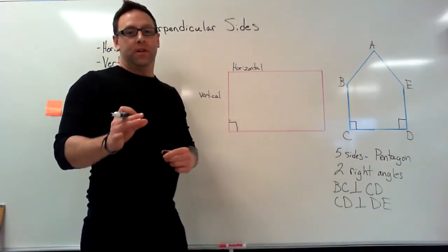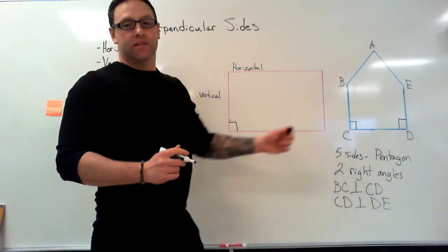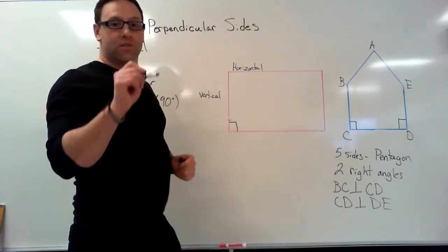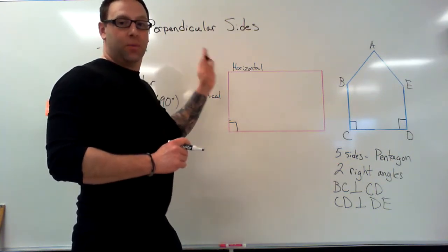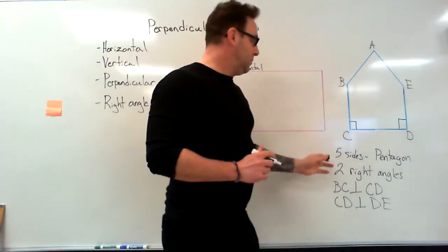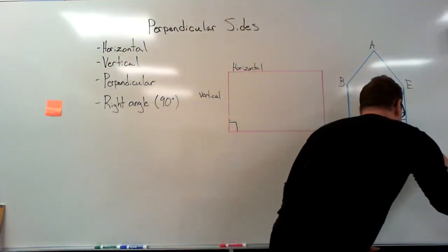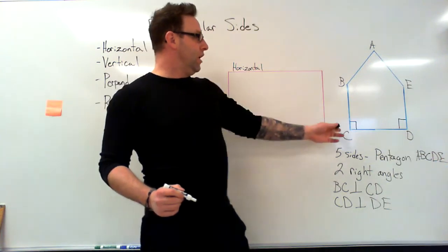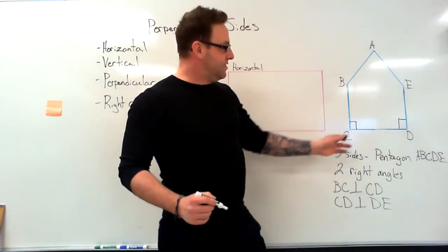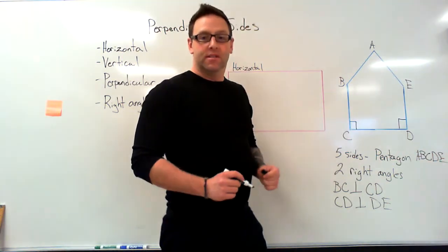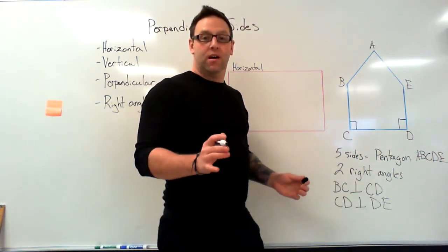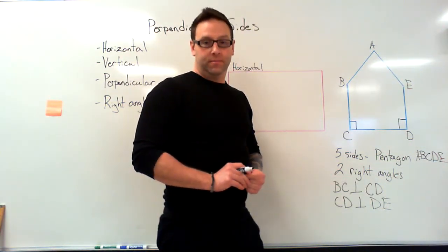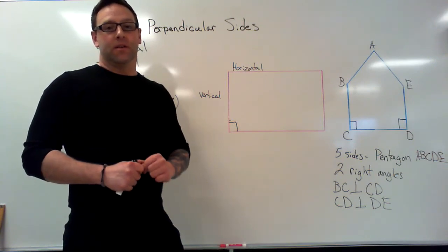Let's review: perpendicular sides — when any two sides of a shape meet and form a right angle, we mark that with a square and say that those sides are perpendicular. In this shape, pentagon ABCDE, we have two right angles. Line BC is perpendicular to line CD, and line CD is perpendicular to line DE. Thanks for watching!